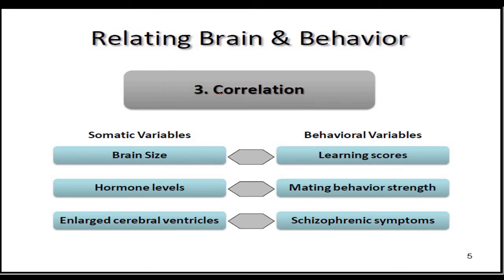Number three is correlation — the correlation between the brain and the behavior. For example, brain size and learning scores: a larger brain correlates with higher intelligence. A smaller brain size correlates with lower learning scores. Hormone levels relate to the strength of mating behavior. Enlarged cerebral ventricles can sometimes cause schizophrenic symptoms or disease. So there is also a correlational effect.